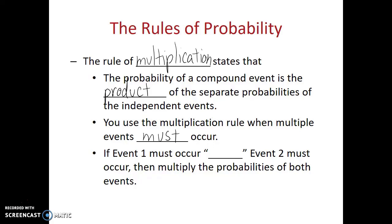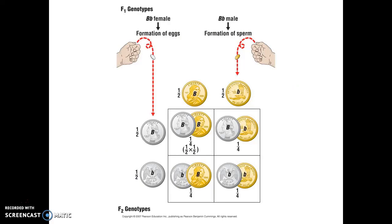So in order to get the result we're looking for, if event 1 must occur and event 2 must occur, then we multiply the probabilities of both events. This mathematical rule sounds complicated in words, but let's look at an example. Here we have a very simple Punnett square about flipping coins — a golden dollar coin and a quarter.